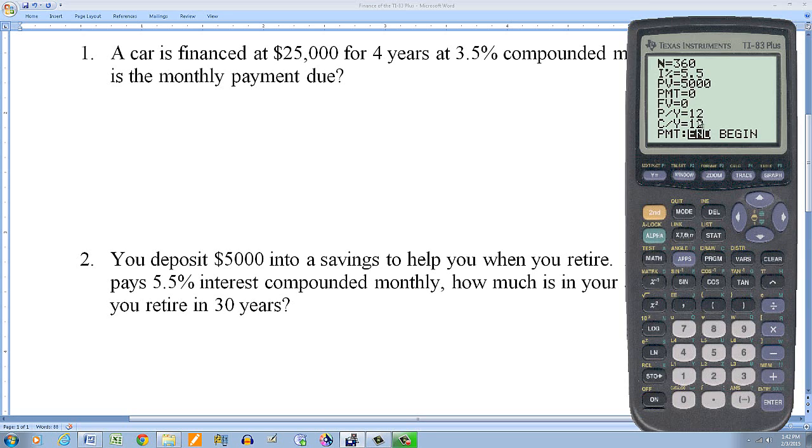So in this case, I want future value, so I leave the cursor there on future value. FV, hit alpha, and then enter. And I get, again, ignore the negative, so it's just going to be $25,936.94. So that's what you're going to have in your account if you deposit $5,000 now. And just let it sit in that account, earning interest at 5.5% compounded monthly for 30 years. When you retire, then you're going to have the $25,936.94.